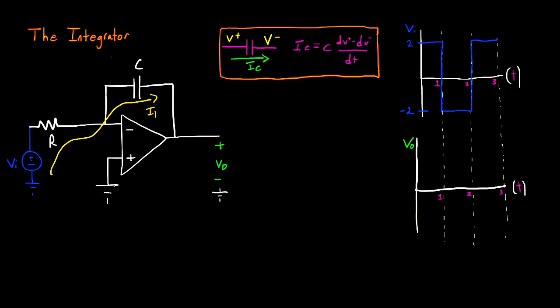Next, I have to define my node voltages. My input source, VI, is defined with reference to ground, so I can call this node VI here. In the same way, my output voltage is reference to ground as well, so I can call this node VO. The positive node being connected to ground has a zero potential.